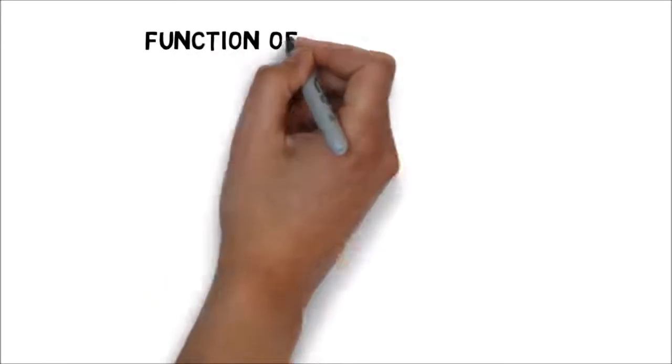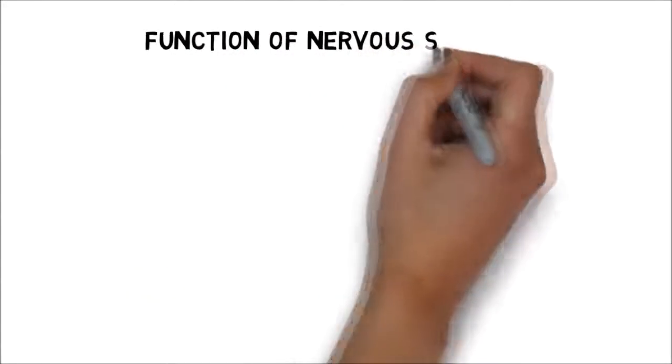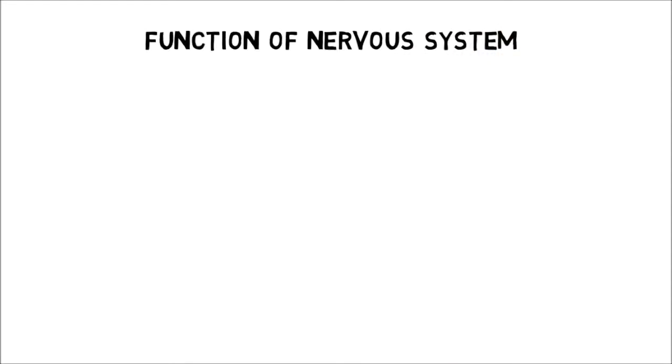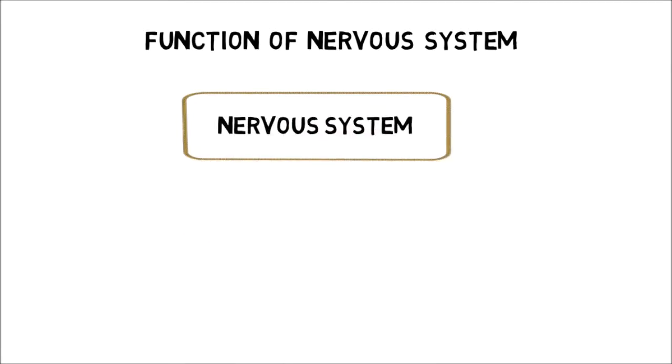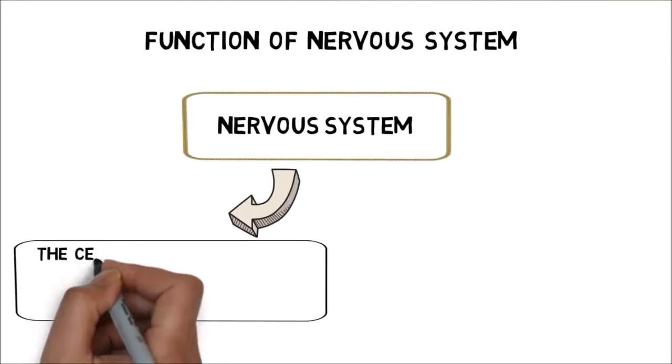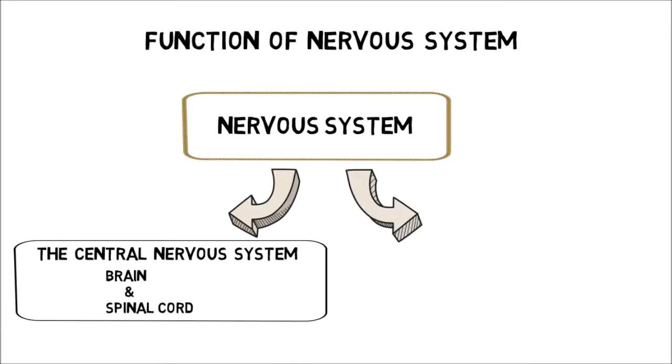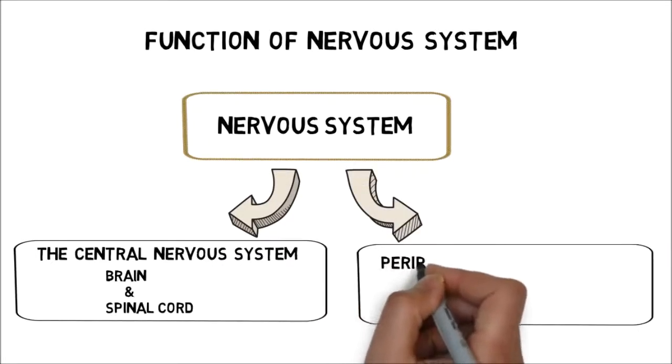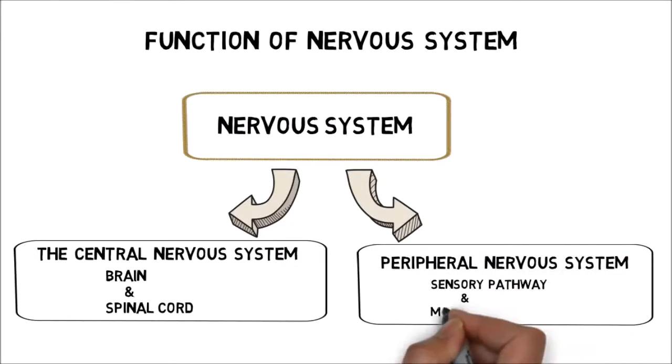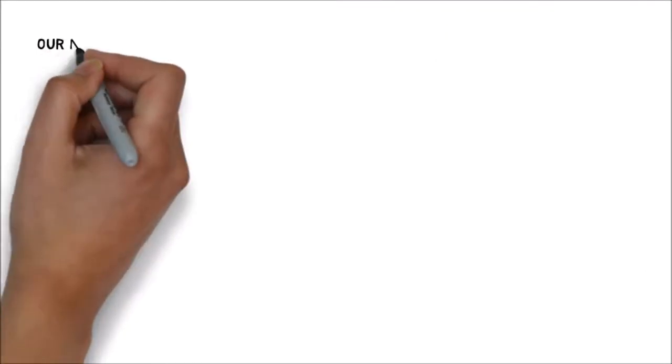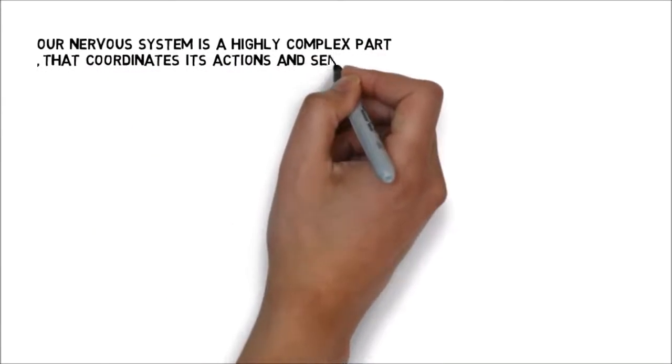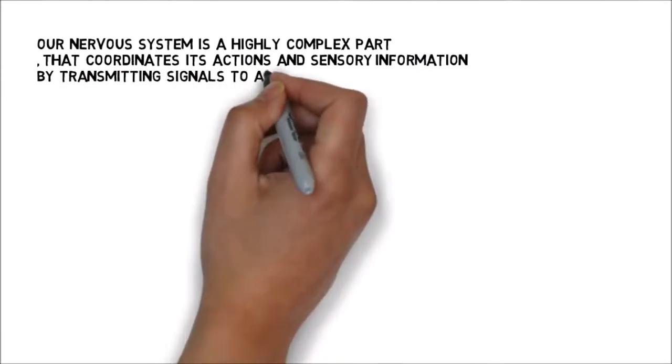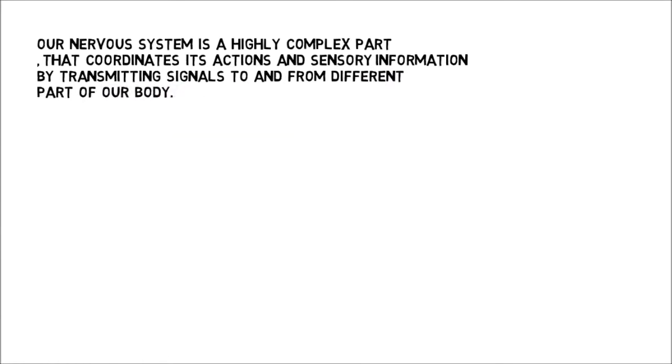Hence, to know more about the relationship between mind and body, we have to understand the functions of the nervous system. Let us discuss the nervous system in detail. Human nervous system can be categorized into two major subdivisions: first, the central nervous system, brain and spinal cord; second, the peripheral nervous system, which constitutes the sensory pathway and motor pathway. It's a highly complex part that coordinates its actions and sensory information by transmitting signals to and from different parts of our body. Remember, all cells of our nervous system are made out of neurons.